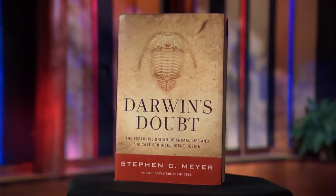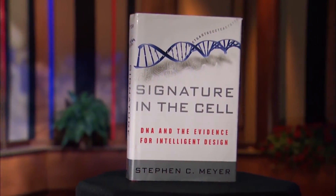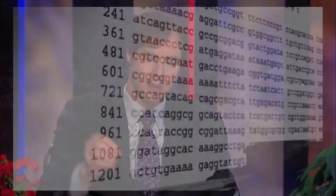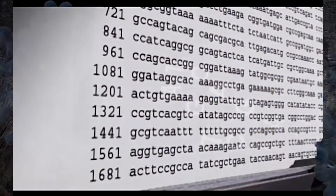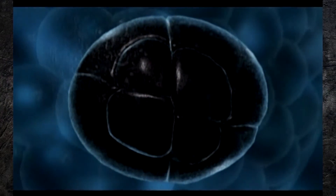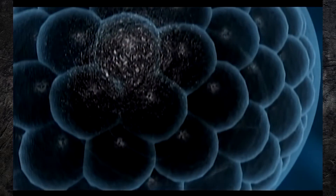What I argue in Darwin's Doubt and also in Signature in the Cell is there is only one known cause for the origin of functional information — information that performs a communication function. And that cause is intelligence. That's precisely the effect we see in life that we have to explain: the origin of the information in the digital code in DNA. We've also been talking about this higher-level information processing system and the epigenetic information involved in building animal body plans.